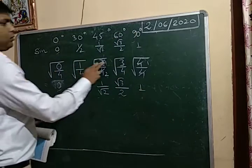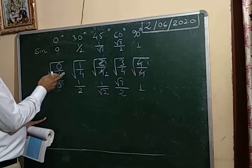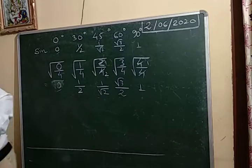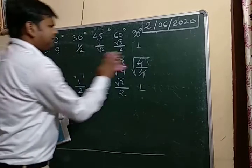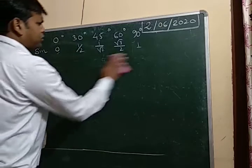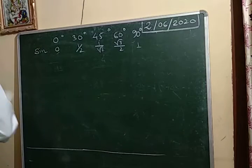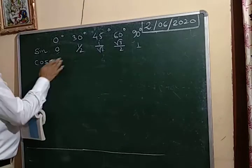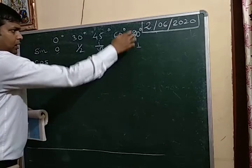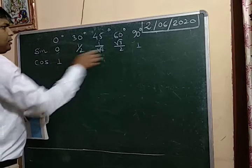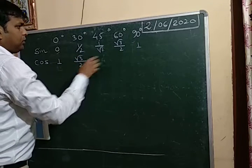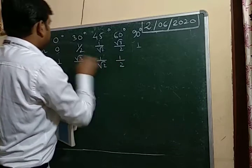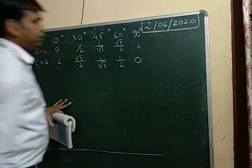This is the way to remember: write 0, 1, 2, 3, 4, divide by 4, and then take the square root. After getting the sine row, for cosine: the cosine values will be the reverse values of sine. So cosine goes: 1, root 3 by 2, 1 by root 2, half, and 0 — for 0°, 30°, 45°, 60°, and 90° respectively.